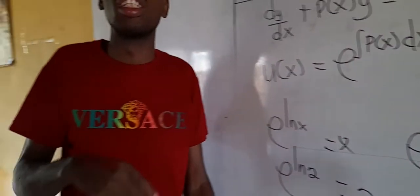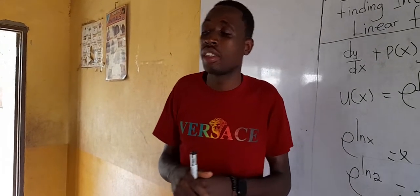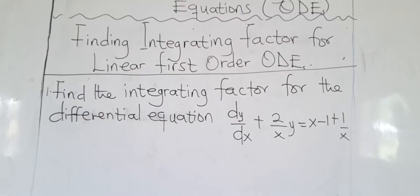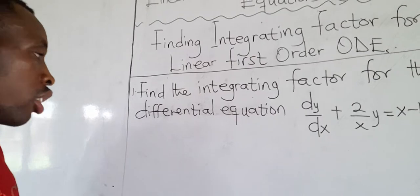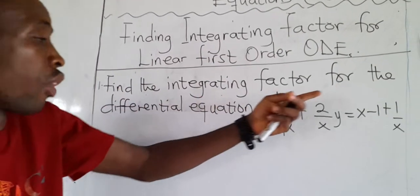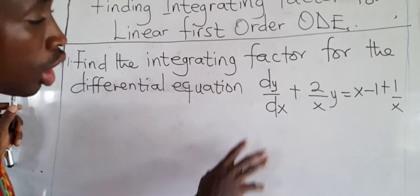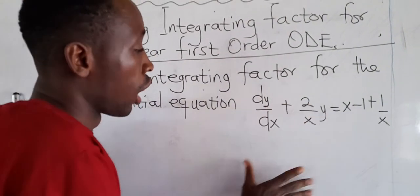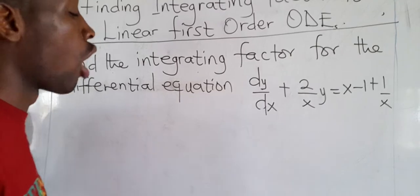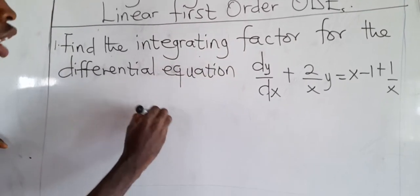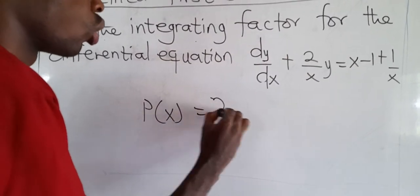We take sample questions and find the integrating factor for a linear first order ODE. First check whether it is a linear first order ODE — yes, it takes that form. Check whether the coefficient of the derivative is 1 — it is 1, so we have no problem. The next thing is to find the coefficient of y, which is P(x) = 2/x.